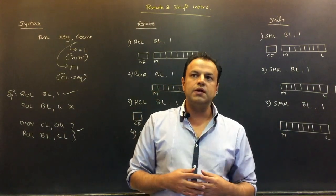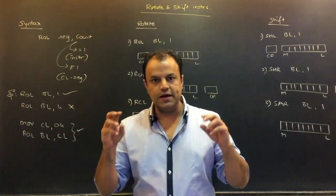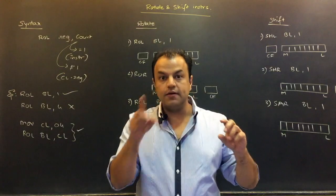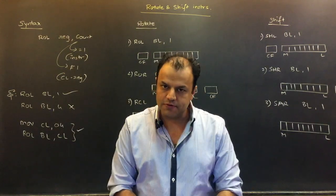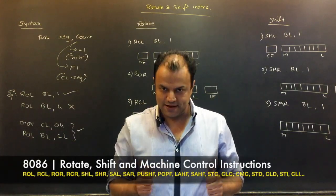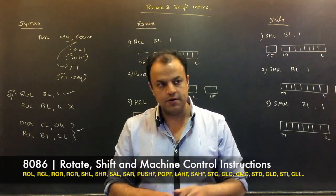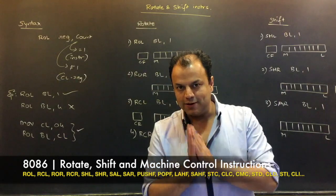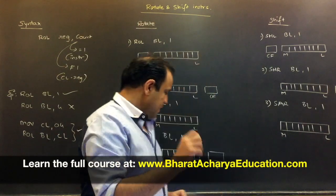Let's take examples. Suppose I take an 8-bit register and rotate it 8 times — everything comes back to its original position. But if I shift it 8 times, the whole register will end up becoming 0. Is the difference between a rotate and a shift clear now?